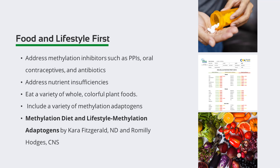Examples of methylation adaptogens include anthocyanins in berries, betonins from beetroot, Swiss chard, and amaranth, coumaric acid from peanuts, navy beans, carrots, tomatoes, basil, garlic, wine vinegar, and barley, and sulforaphane from broccoli and other cruciferous vegetables — and there are many others. Consuming a variety of colorful plant foods is the key to obtaining a variety of these adaptogens.